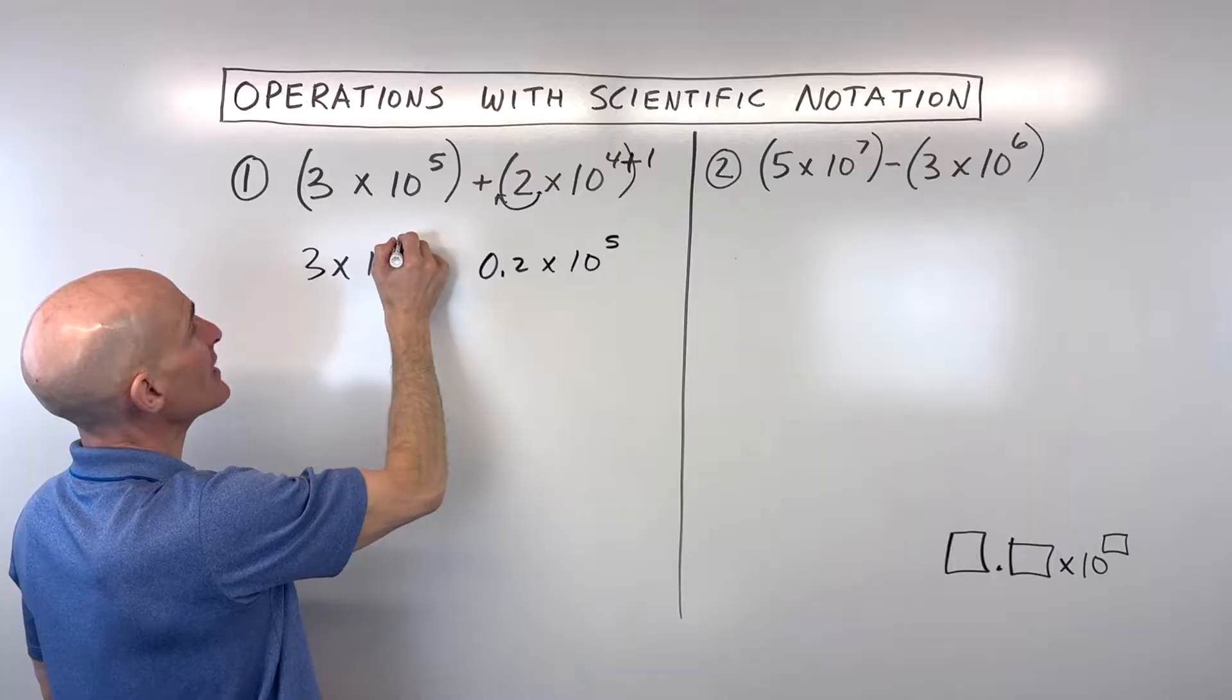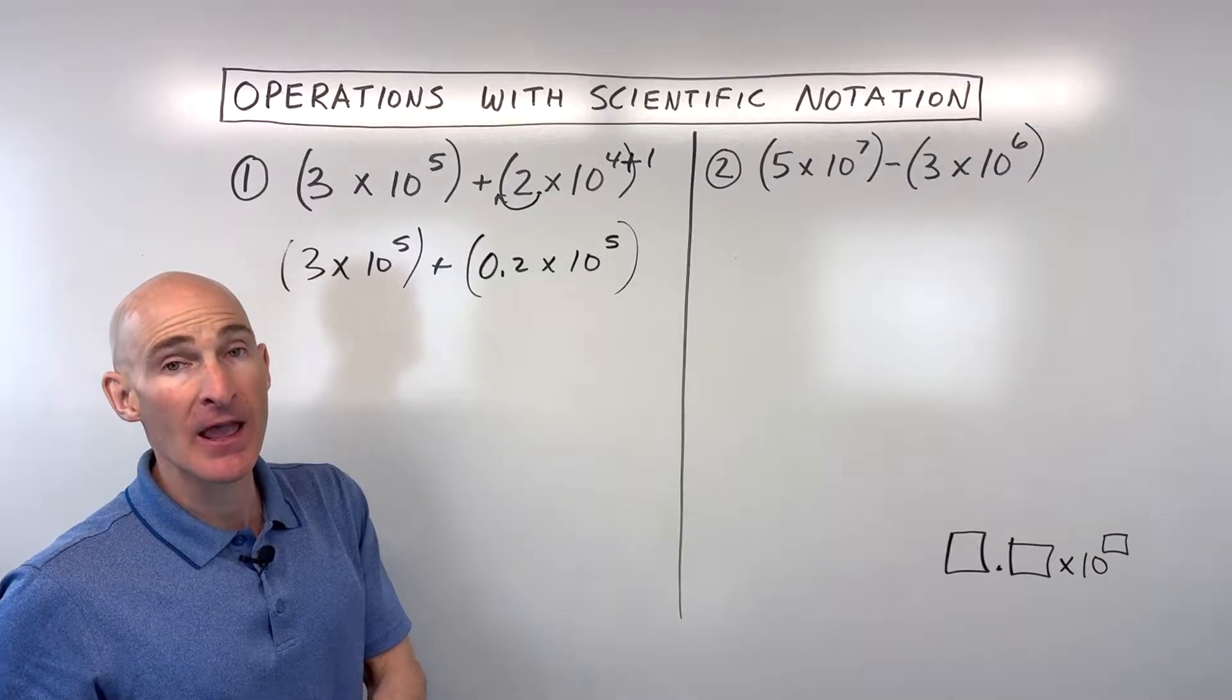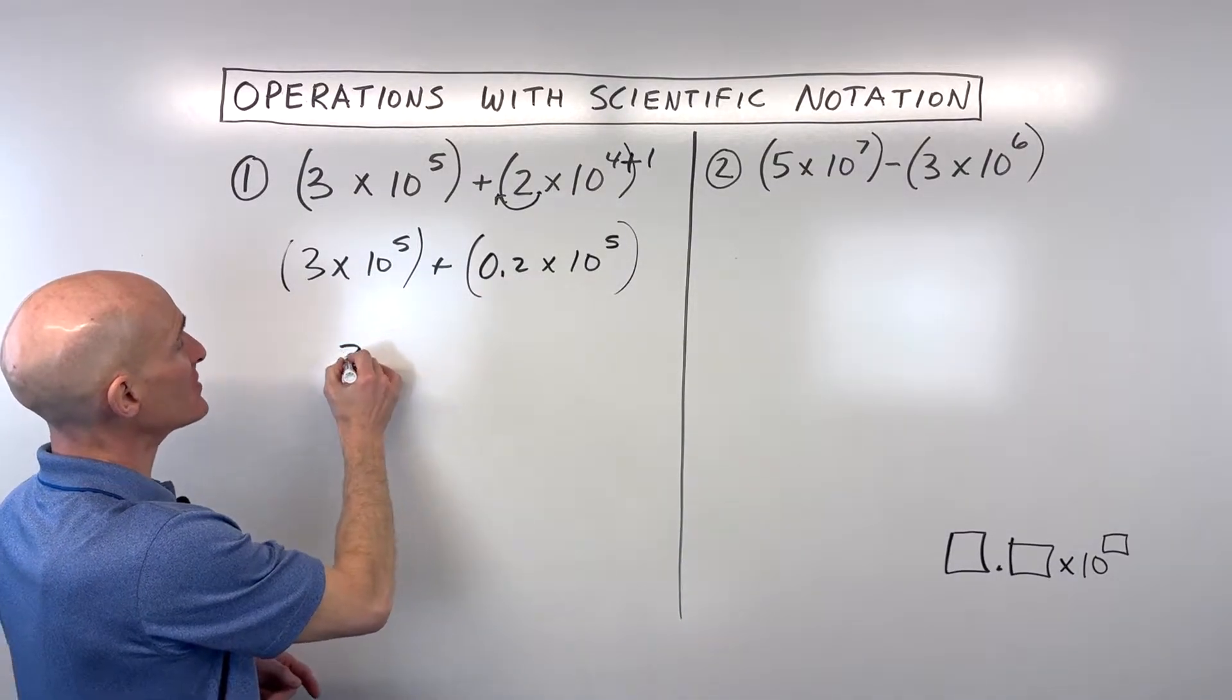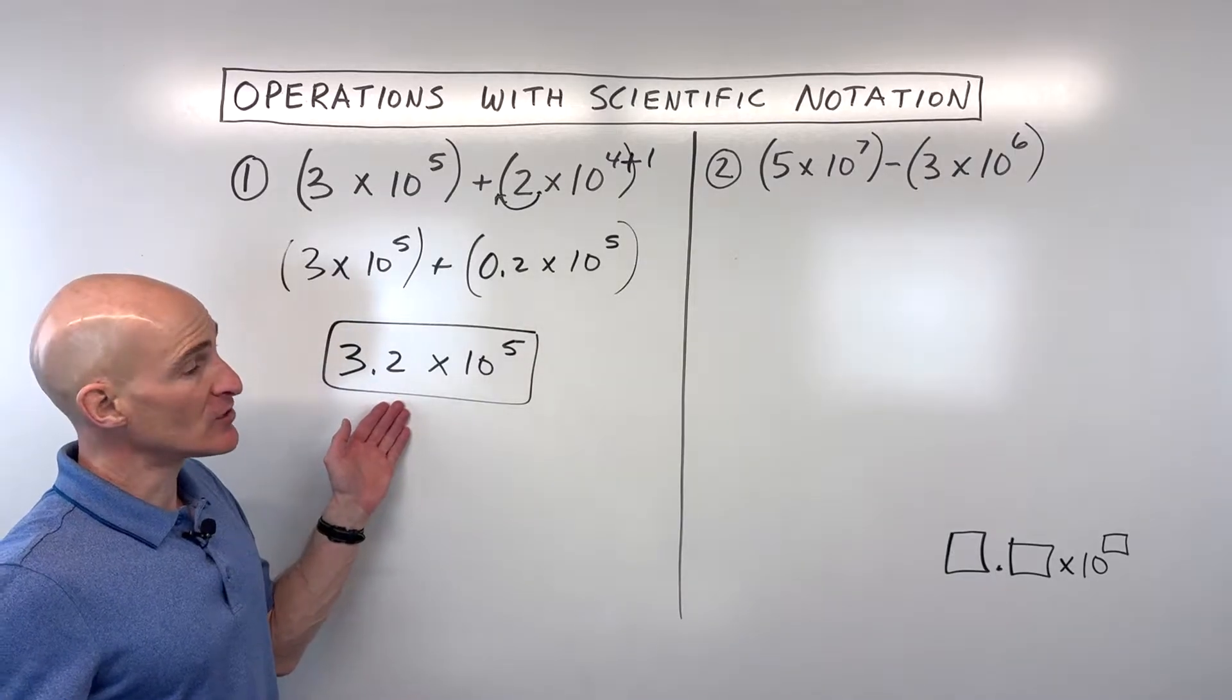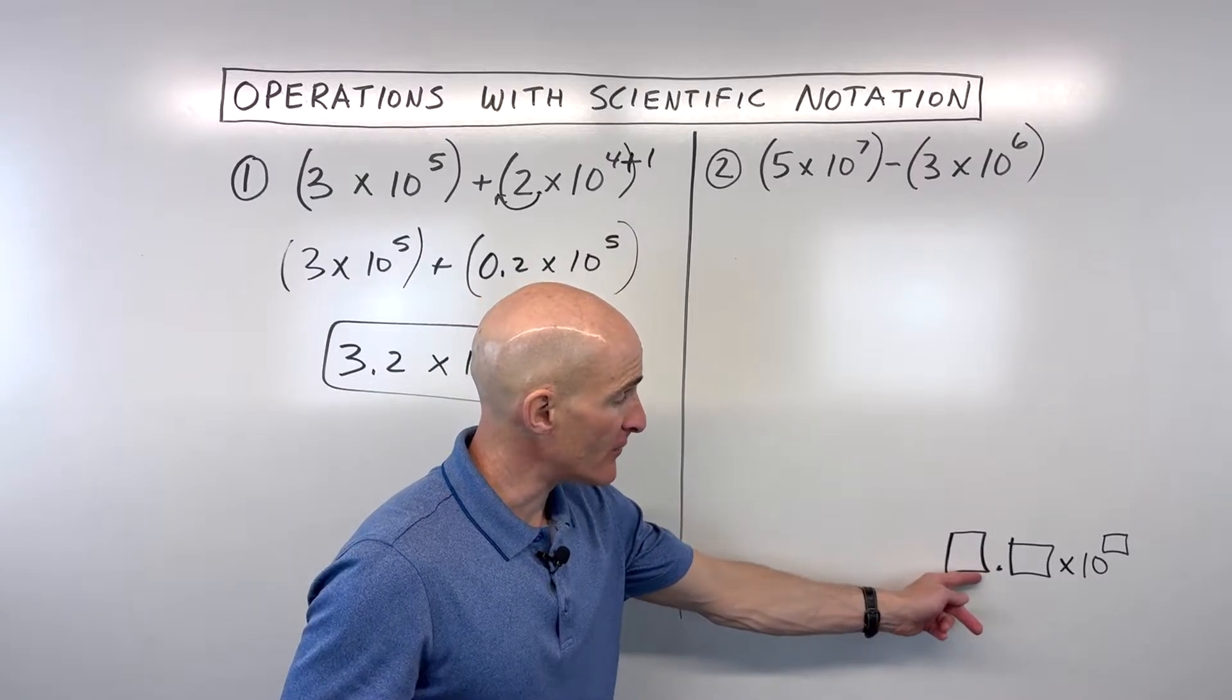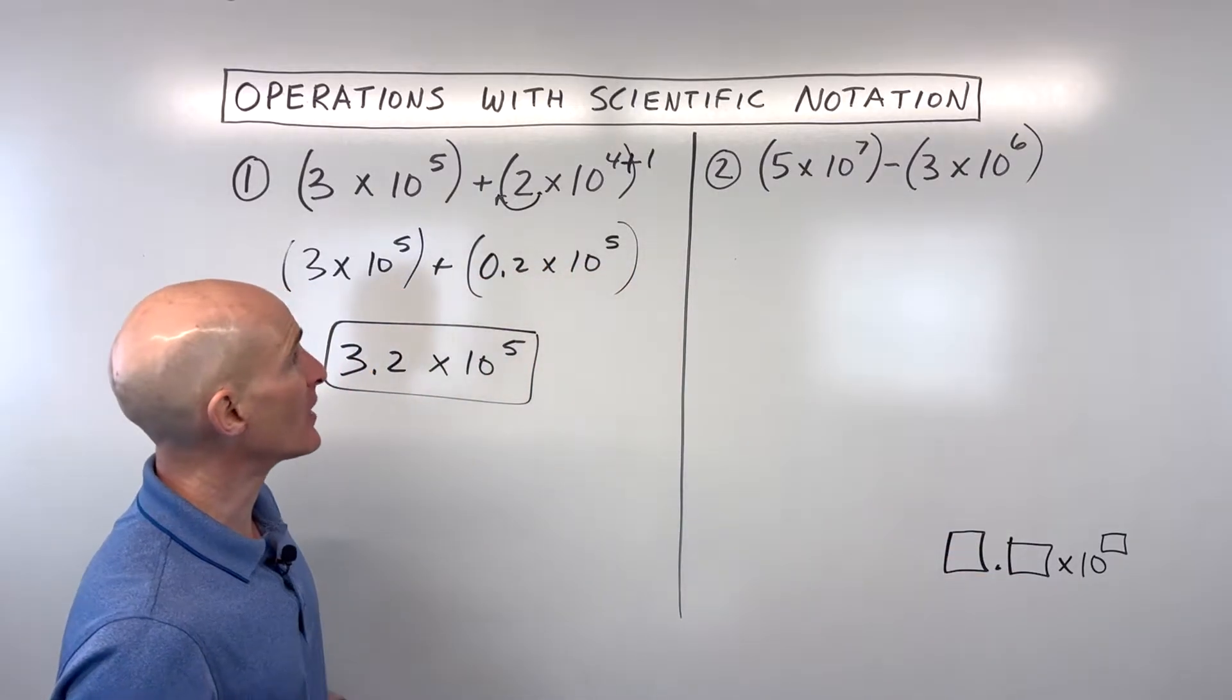This is 3 times 10 to the 5th. Now we're dealing with numbers that are of the same order of magnitude, the same power of 10. We can add them together now. We can say 3 plus 0.2 is 3.2 times 10 to the 5th power, and you got it. Remember, a number in scientific notation has a number from 1 to 9 in front of the decimal point, the rest of the significant digits, and then times 10 to a power. It could be positive or negative power.